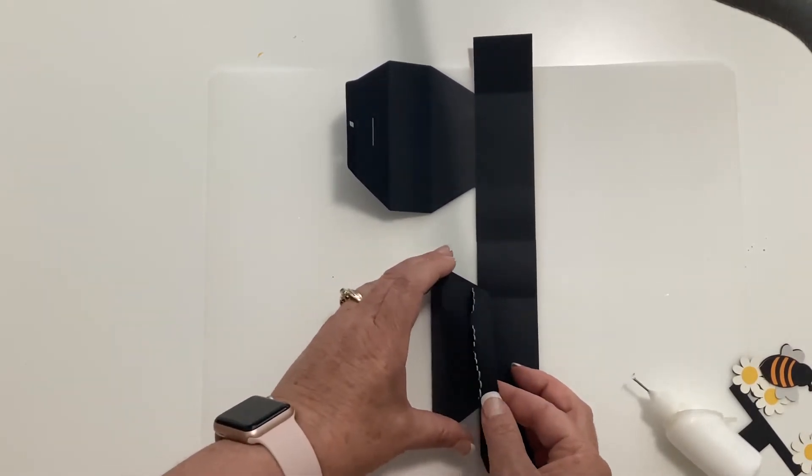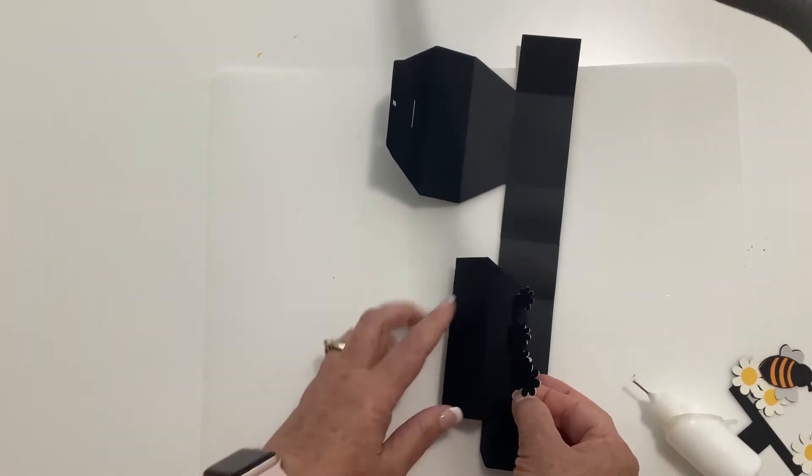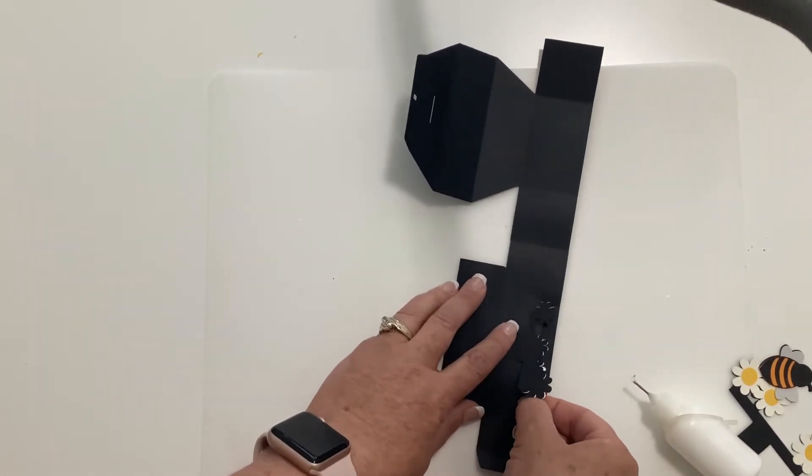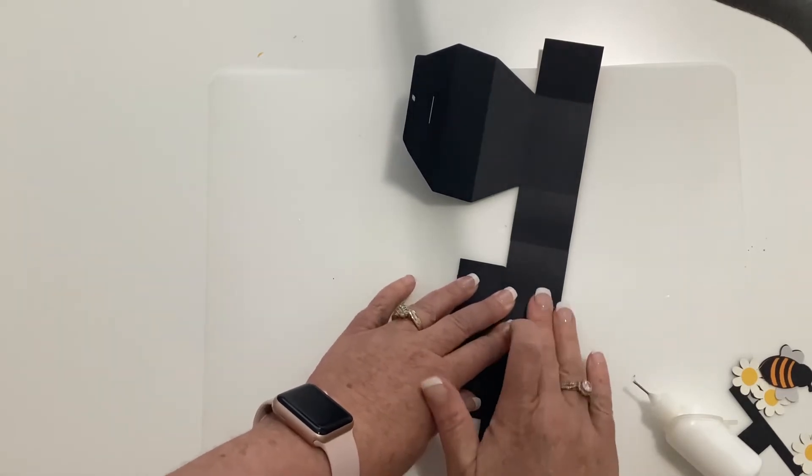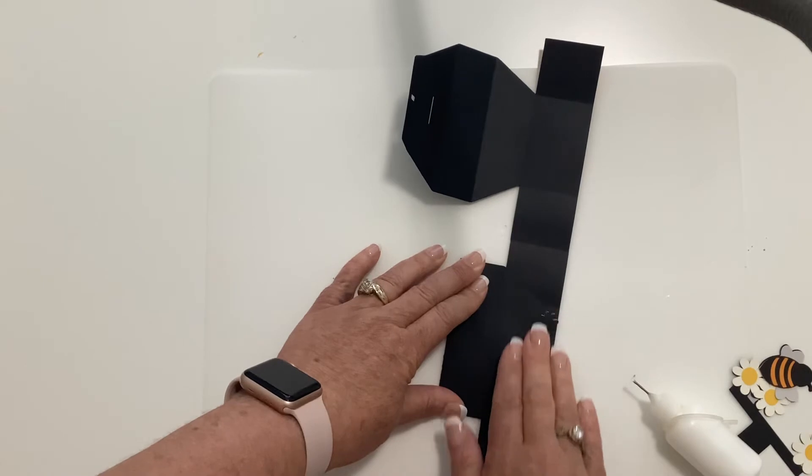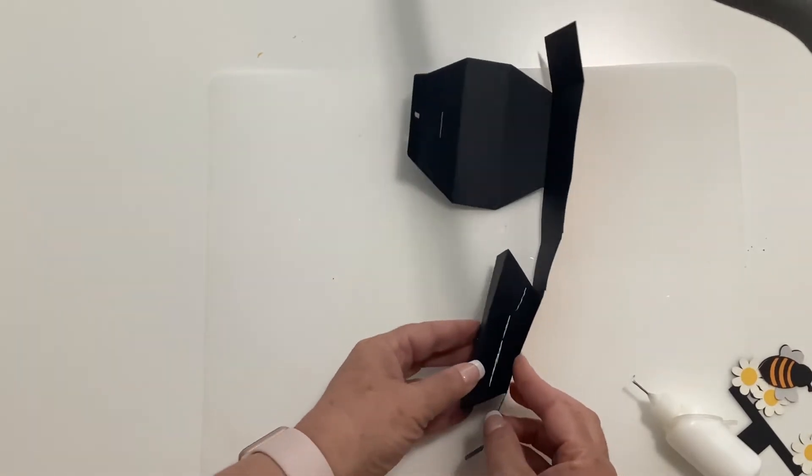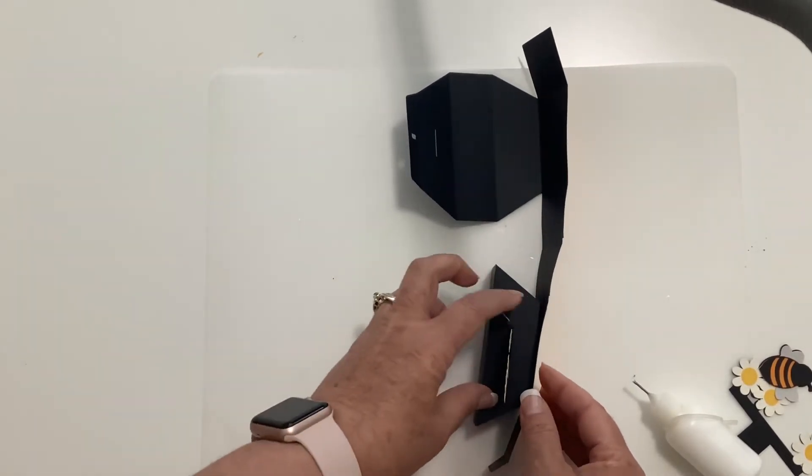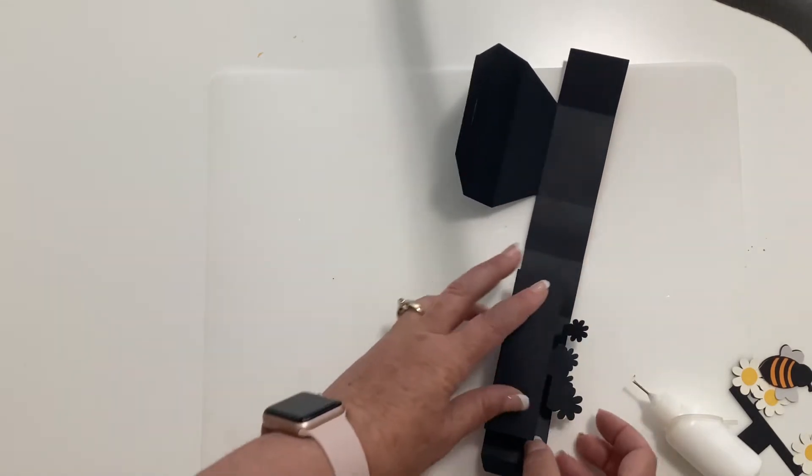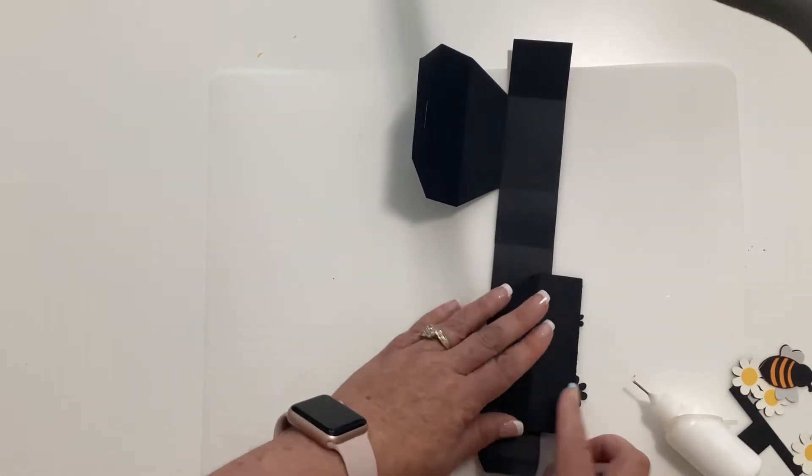We're going to fold it now on this bottom crease right here and fold it flat. That tab is folded under and we're going to press it. So when it pops open, there's your front piece. Okay, when we lay it down and fold that up again.